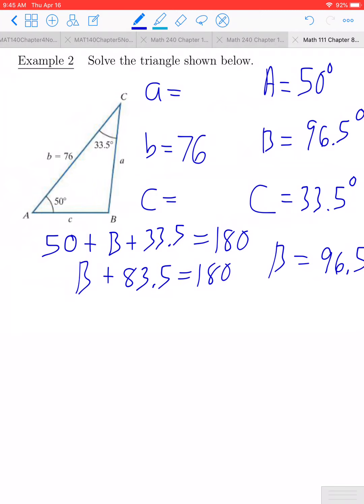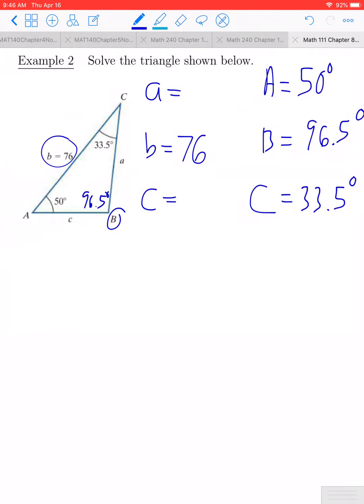We still have two more unknowns. We don't know the length of side A, nor do we know the length of side C. We can use the law of sines in order to help us solve for both of those. The reason why we're going to be able to use the law of sines is we now know the measure of angle B, that's 96.5 degrees. So we know angle B and we know its corresponding side, so that will allow us to solve and set up a law of sines ratio.